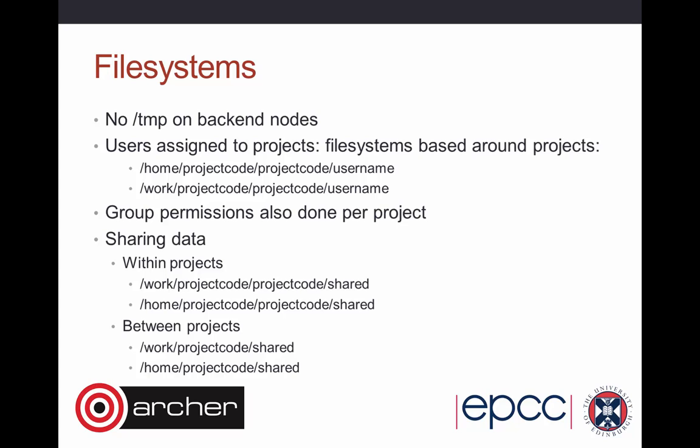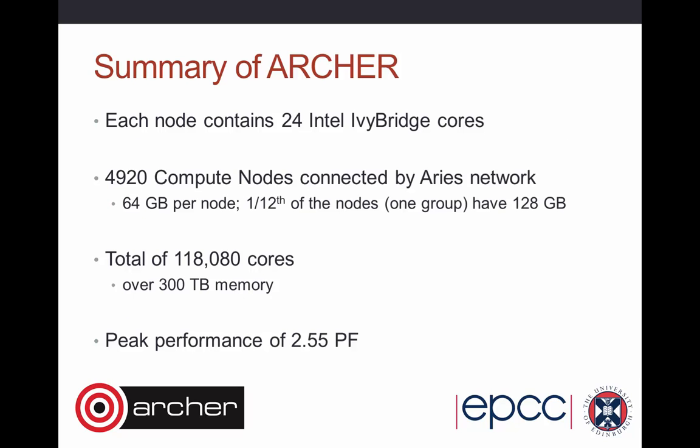In summary: each node contains 24 Intel Ivy Bridge cores. There are 4,920 compute nodes connected by the Aries network. Most nodes have 64 gigabytes of RAM, but one group — a twelfth of the nodes — has 128 gigabytes, which you can select if needed. There are over 118,000 cores, 300 terabytes of memory, and the peak performance of Archer is just over two and a half petaflops.